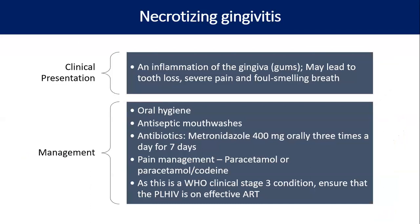Necrotizing gingivitis presents as inflammation of the gingiva or gums, which may lead to loss of teeth, severe pain, and foul-smelling breath. Management is basically maintaining oral hygiene, antiseptic mouthwash, antibiotics like metronidazole 400 mg three times a day for seven days, and pain management with paracetamol or codeine. As this is a WHO clinical stage 3 condition, we need to ensure the patient is on effective ART by doing a viral load test.